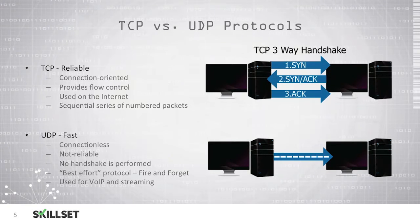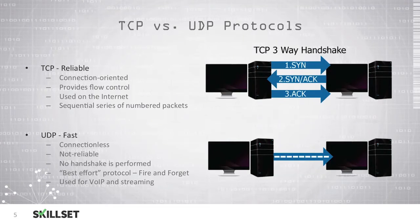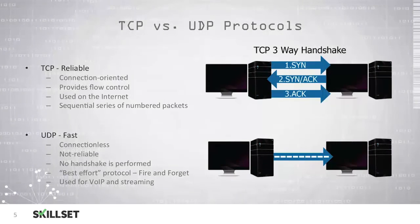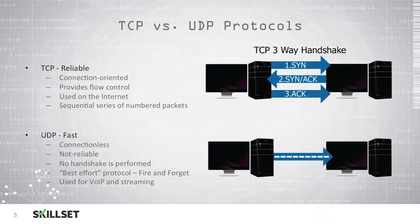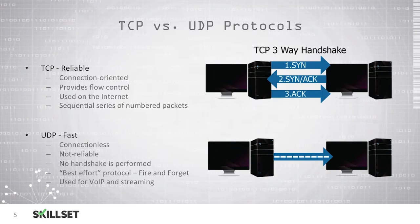TCP also uses a three-way handshake. This begins with the sending computer sending a SYN, or synchronize, packet to the recipient's computer. The recipient responds with a SYN-ACK, or synchronization acknowledgement, and then the sending computer responds with an acknowledgement letting the receiving computer know that it received its acknowledgement of the synchronize. This three-way handshake is used to ensure reliability and to make sure that the receiving computer is online and is receiving data properly. TCP will send packets and confirm that the recipient received the packet correctly, and if it did not, it will retransmit the packet until it knows that the recipient received it.